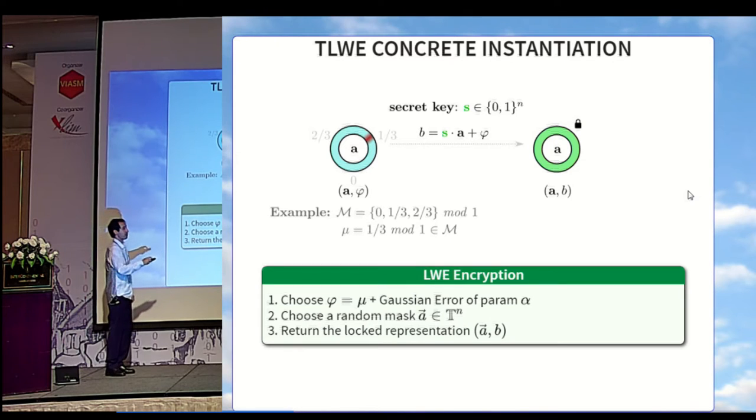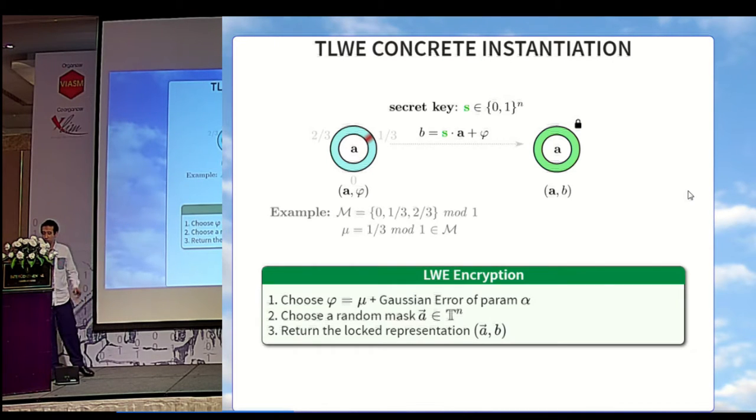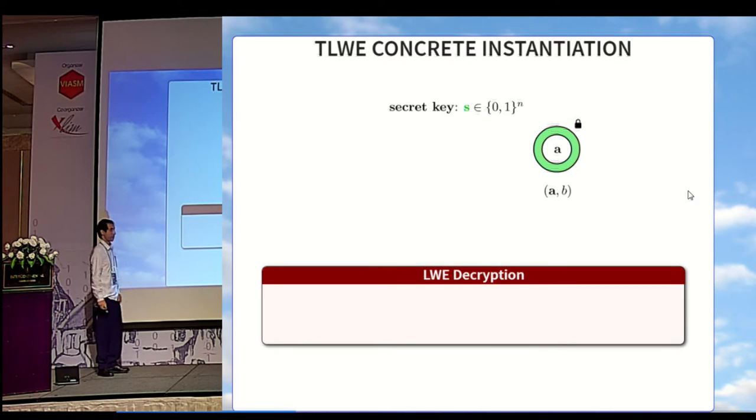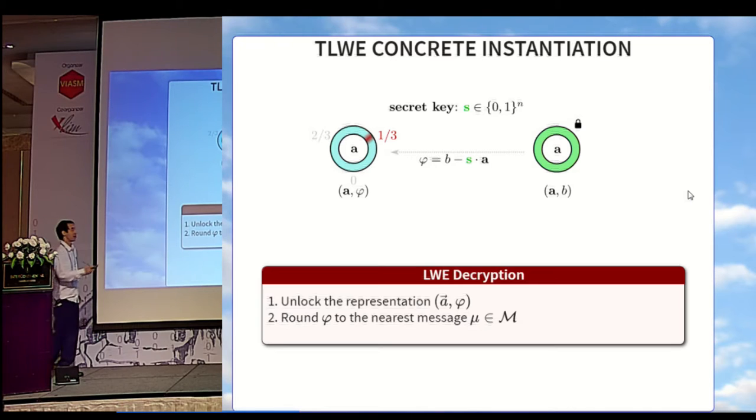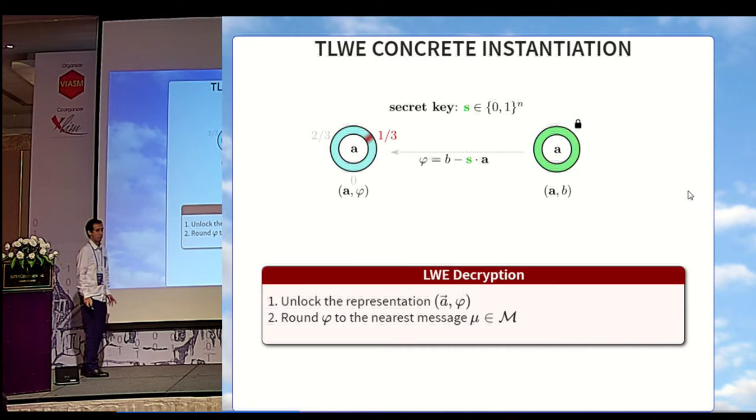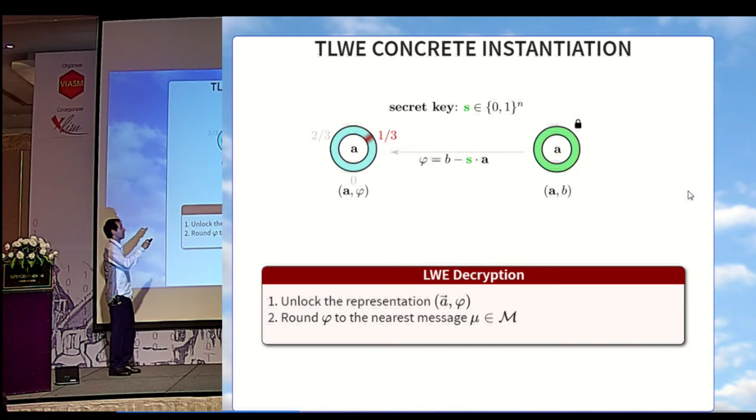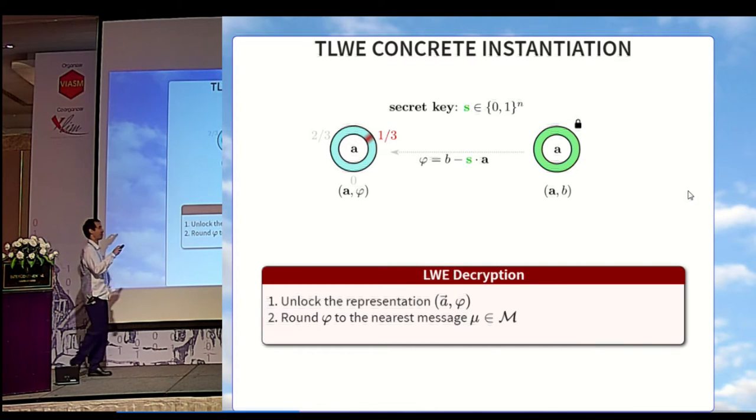Our final ciphertext is AB, which is a vector in the torus, and which is entirely computationally indistinguishable from a random vector, based on a direct worst case to average case reduction. If we want to decrypt the vector, we'll recompute the phase, phi equal B minus SA, and retrieve our original sample from this distribution. All we need to do to recover the message is to round this sample over our discrete message base. But here, when you look at this picture, you can see that there is another way of recovering the message. If you have access to the distribution, which is the case when you are analyzing the algorithm, you can simply take the expectation of this distribution, and it will also be one-third.